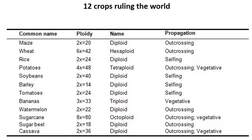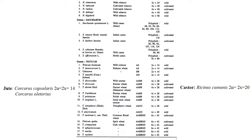Watermelon is diploid and out-crossing or cross-pollinated. Sugarcane is 8x = 80, that is octoploid, out-crossing and vegetatively propagated. Sugar beet is 2n = 18, diploid, out-crossing. Cassava is also diploid with 36 chromosome numbers, vegetative propagation as well as cross-pollination.